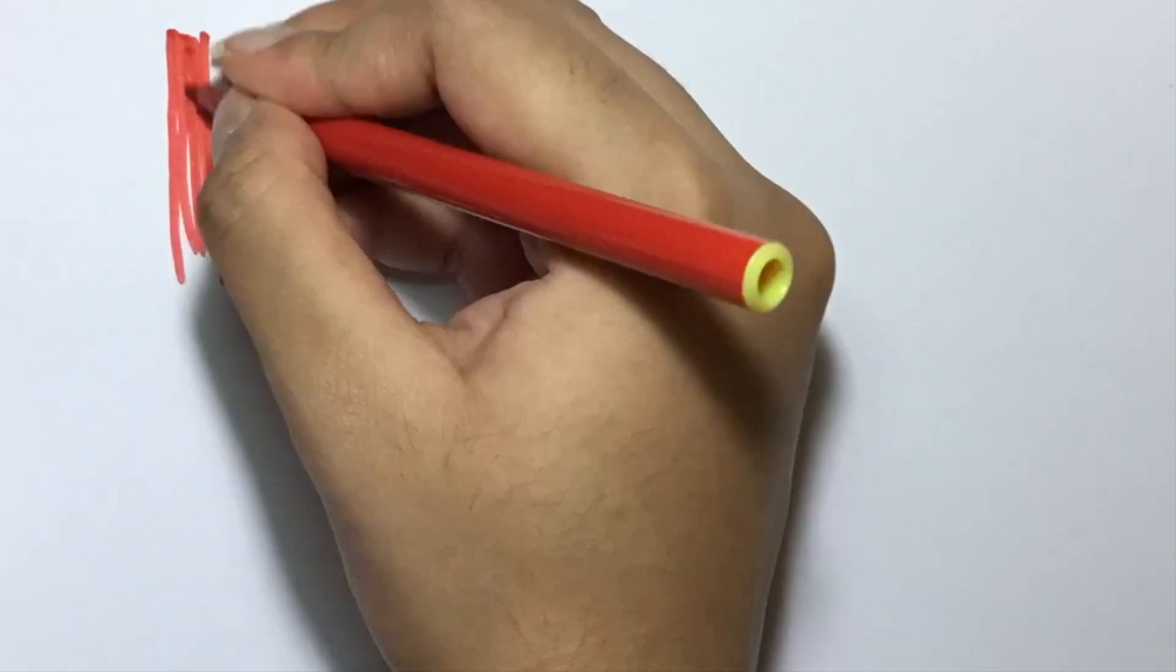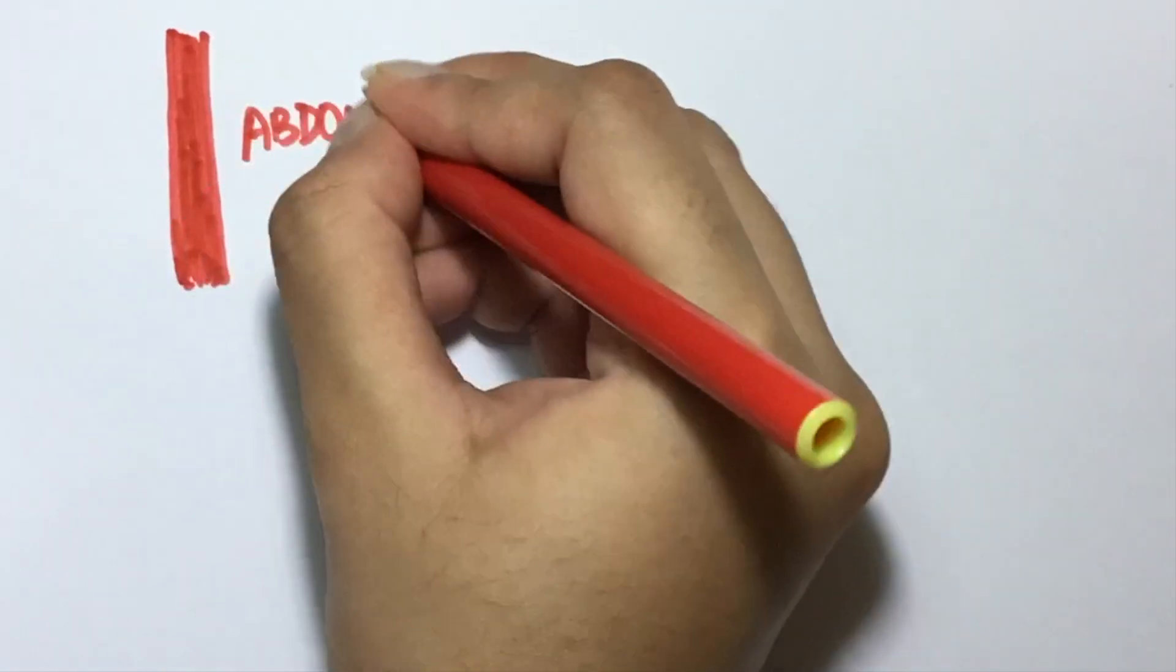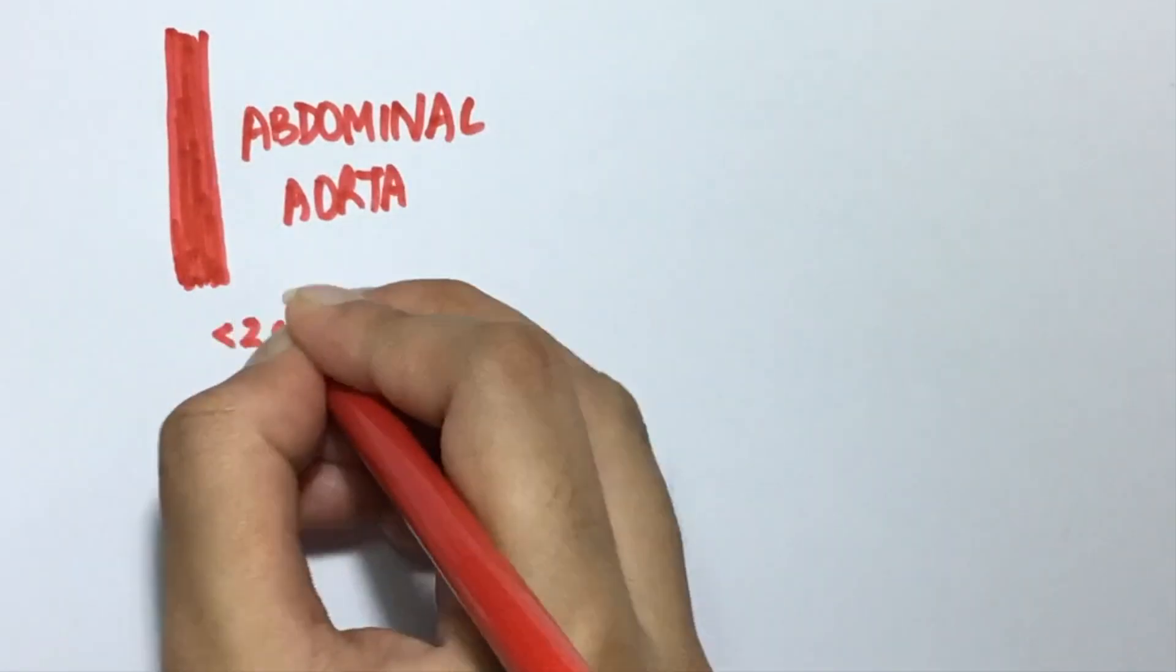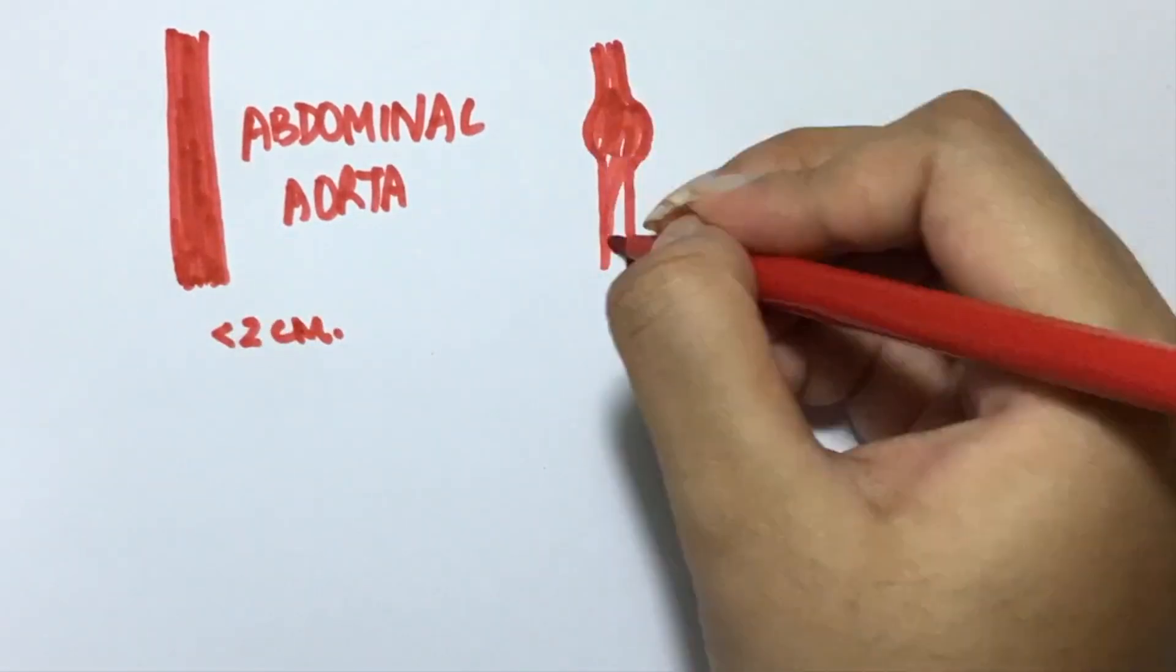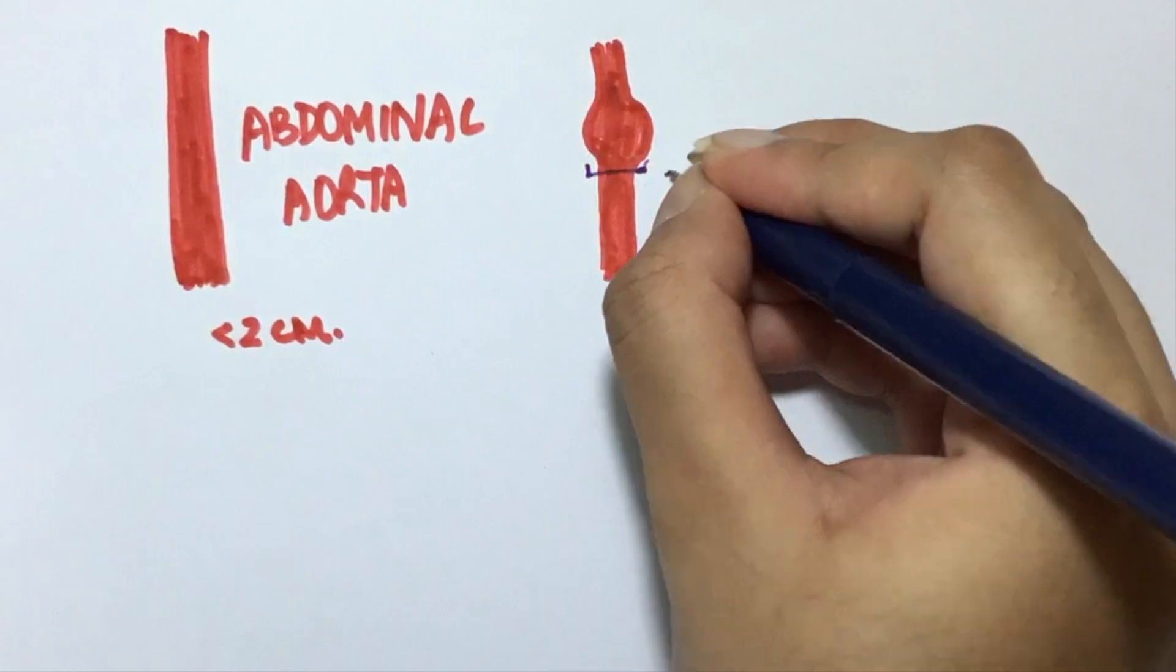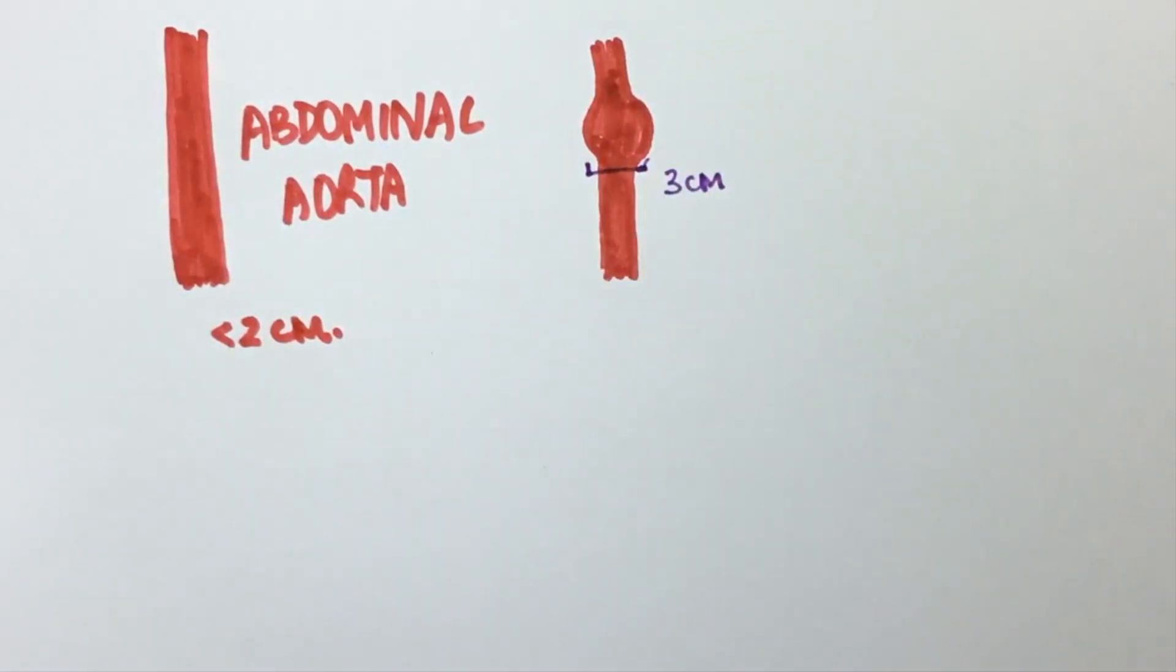The diameter of the abdominal aorta is usually around 2 cm. If any part of the abdominal aorta has a diameter greater than 3 cm, it is known as abdominal aortic aneurysm.